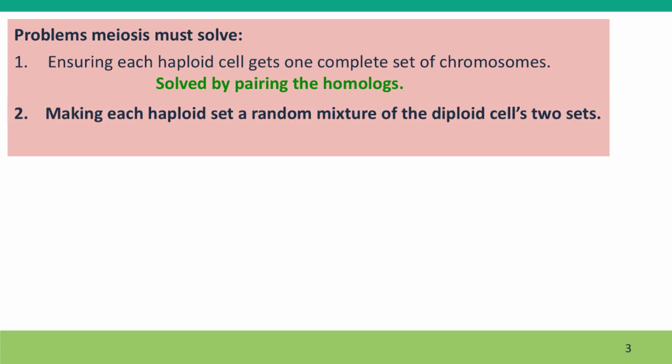The second problem is how does the cell randomly mix the diploid cell's two sets of chromosomes, the sets that the diploid cell inherited from its two parents. And the answer is it doesn't have to do anything special because the chromosomes are randomized spontaneously by their movement in the cell before the spindle fibers attach to them.